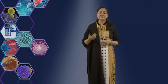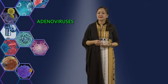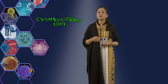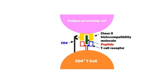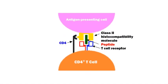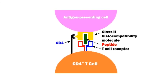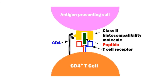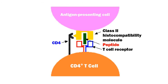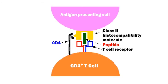Some of these viruses are adenoviruses and cytomegalovirus, or CMV. Viruses like CMV, Marek's virus, and HIV have also been shown to reduce levels of class II MHC molecules on the cell surface, thus reducing antigen presentation to CD4-positive T helper cells.